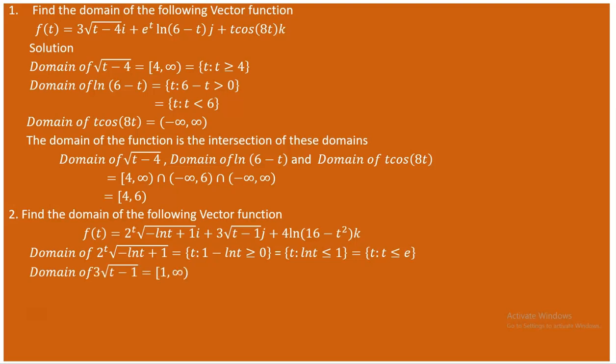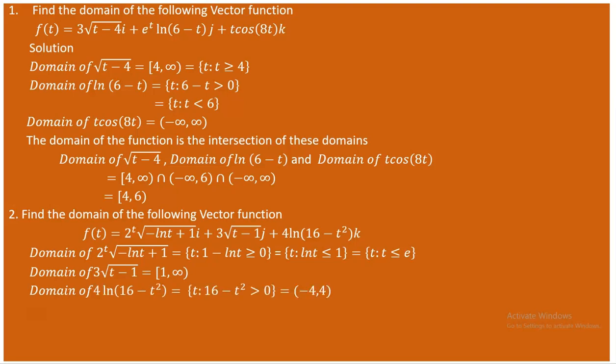For the second component, 3√(t-1), we need t - 1 ≥ 0, so t ≥ 1. This gives the domain [1, ∞).